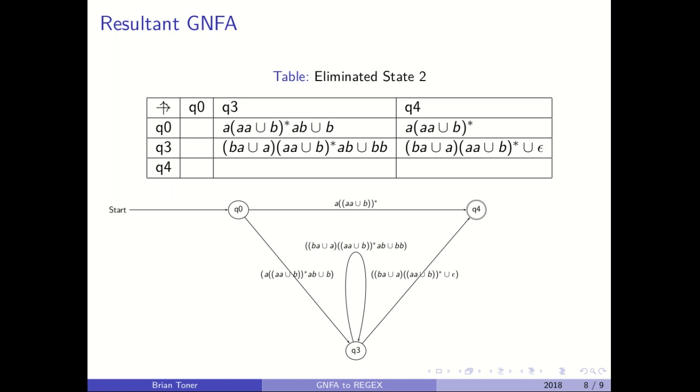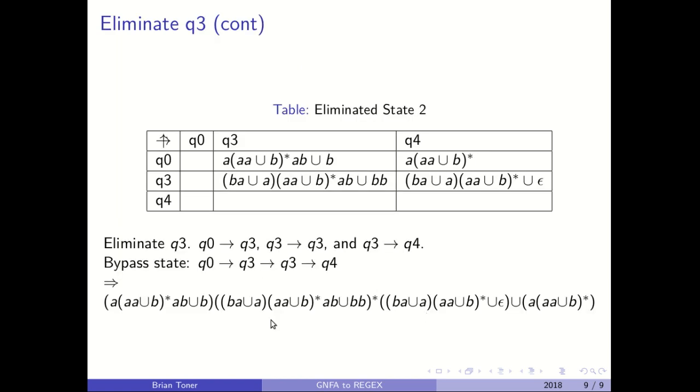And as you probably can guess from now, we're going to rinse and repeat this, and that's going to result in this final regular expression. So again, you want to eliminate Q3. You identify the bypass state. There's only one way to bypass Q3. And this will be your resultant regular expression. So hopefully this was helpful. Hopefully this ended up clearing up any questions that you had about converting a GNFA into a regular expression. And if you have any questions, please feel free to ask me. Thanks again, and good luck.